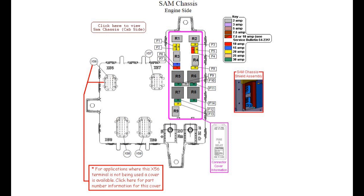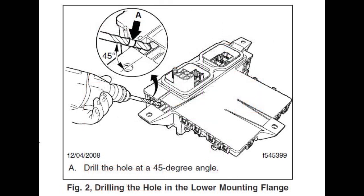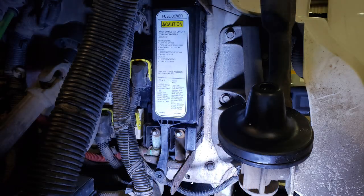This next step that Freightliner recommends may be debatable. They want you to check the SAM chassis for a hole in the lower mounting flange. If there's no hole there, they want you to drill one to allow moisture to drain out. Personally, I've never done this — I see it as another point of access for moisture and corrosion. But if you decide to do it, drill a quarter-inch hole at a 45-degree angle, and only to a depth of one inch — no further. Besides that, the rest of the installation is simply the reverse of the removal.